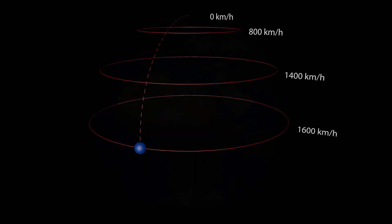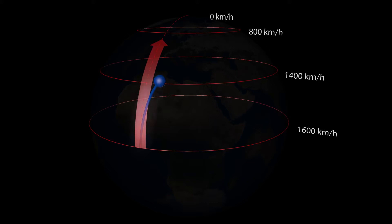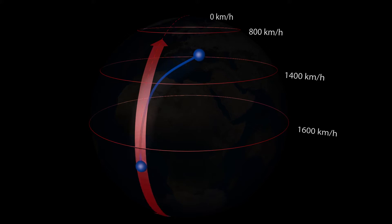Imagine a fluid particle travelling at a constant eastward velocity at the equator. If this particle now moves towards the north, its eastward momentum is greater than that of a particle already located on the Earth further north. The particle therefore appears to be deflected to the right. Conversely, a particle in the southern hemisphere is deflected to the left.